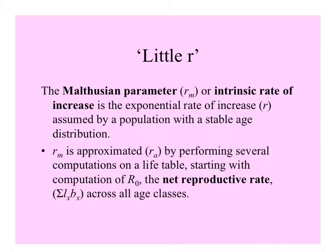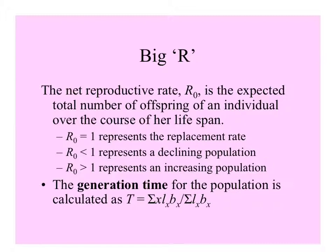Let's talk about little r, the intrinsic rate of increase, sometimes also called the Malthusian parameter after Thomas Malthus. A population with a stable age distribution will increase or decrease according to this rate. It is approximated by performing several computations on a life table, starting with the computation of big R sub zero, the net reproductive rate, which is the sum of survivorship times the birth rate across all age classes. Big R, the net reproductive rate, is the expected total number of offspring that an individual female would produce over the course of her lifespan.